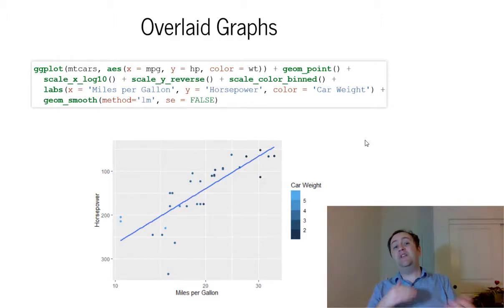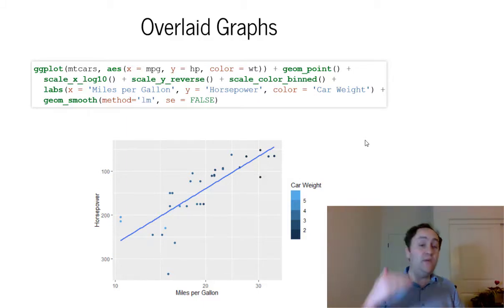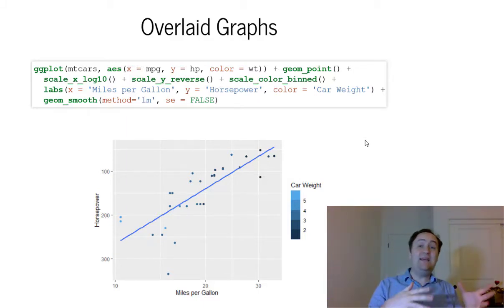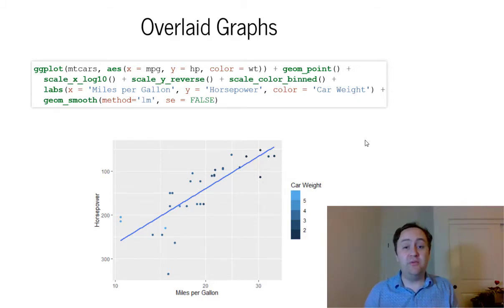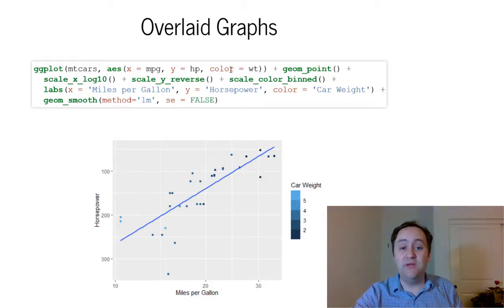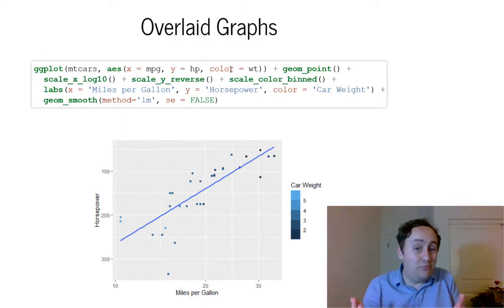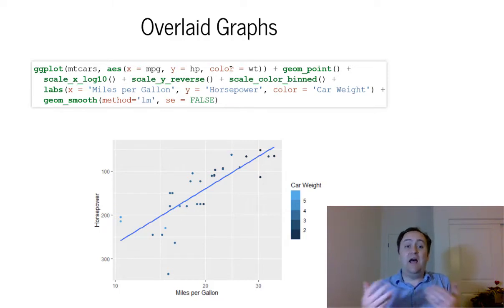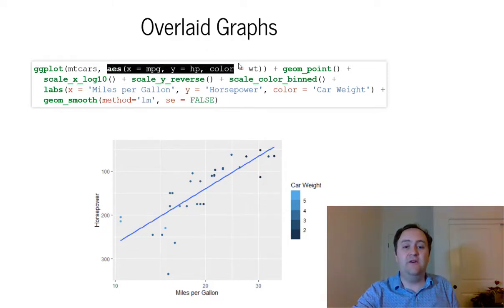You can get a bit more complex if you want to change things between different geometries. We can totally reset the data or the aesthetic from geometry to geometry. For example, I could do a point geometry where I color it separately by weight, then add another point geometry where I color it separately by something else — all I'd have to do is reset the aesthetic function inside that new geometry.